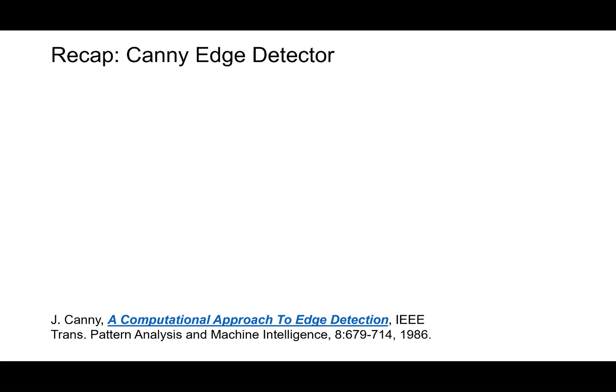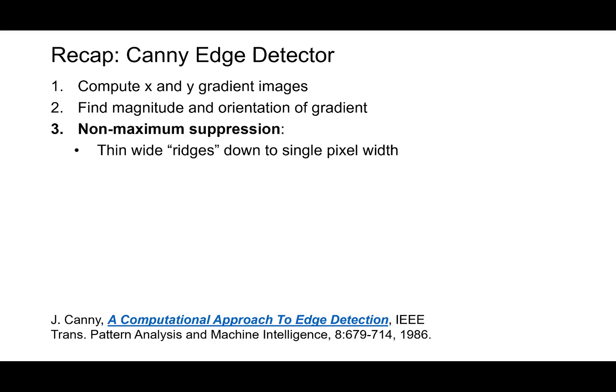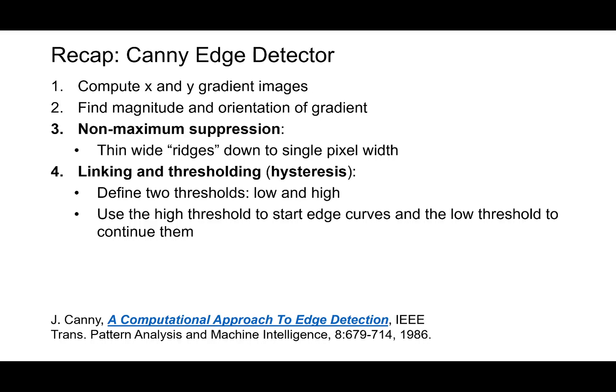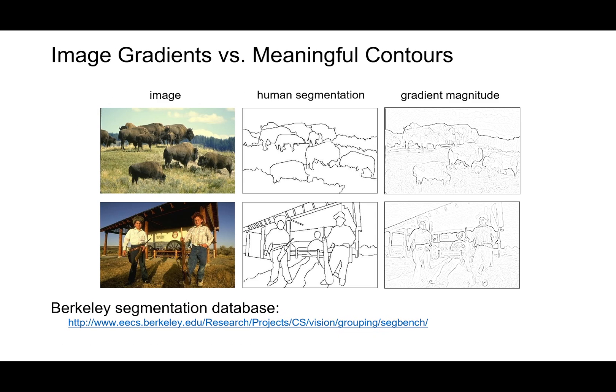I hope Canny edge detection was clear to you. You compute the X and Y gradients of the image, find the magnitude and orientation of the gradient. And then you do non-maximal suppression. And then that thins wide ridges down to single pixel width. Then you have to do the hysteresis thresholding. Define two thresholds, low and high. High threshold is used to start the edges and low threshold is used to continue those edge curves that have been started at the high threshold.